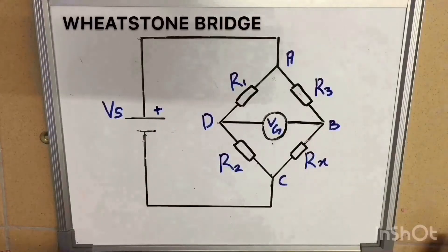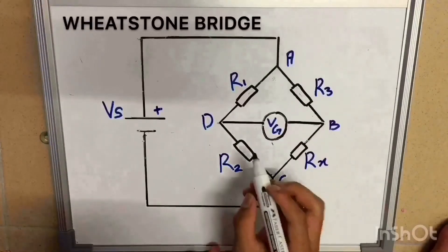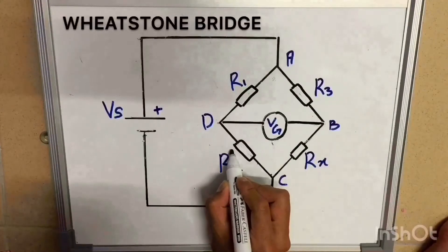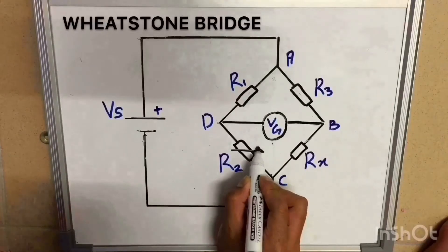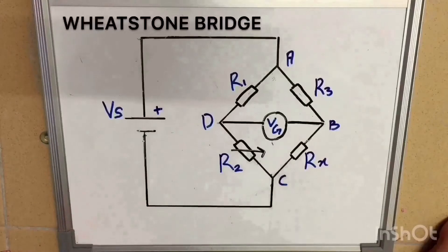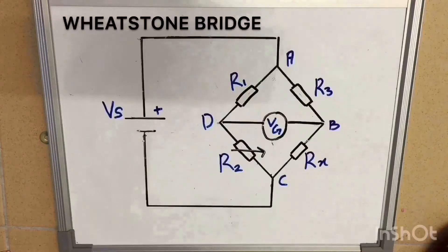I want to introduce the Wheatstone Bridge. The Wheatstone Bridge is an electrical bridge circuit used to measure resistance. This bridge consists of a galvanometer and two parallel branches containing four resistances. One parallel branch contains one known resistance and one unknown resistance. The other parallel branch contains two known resistances.